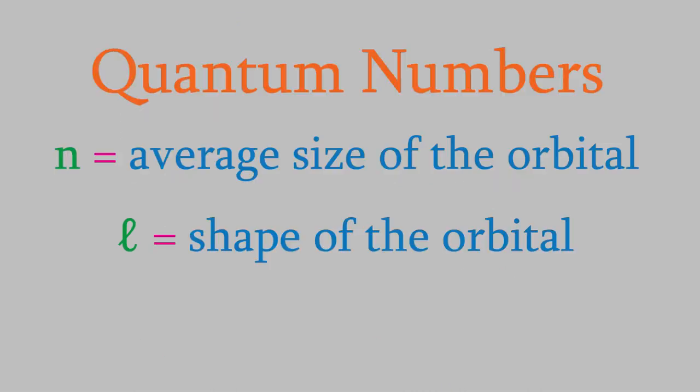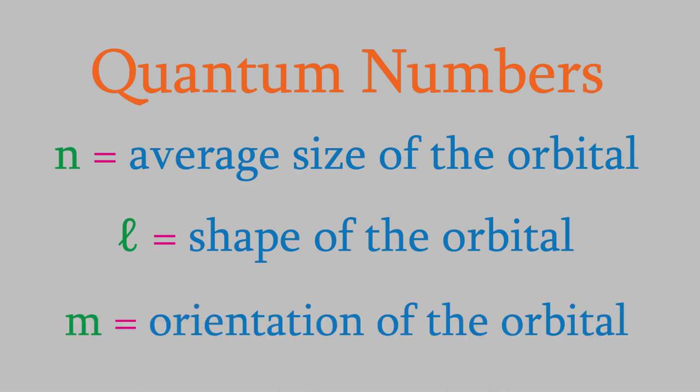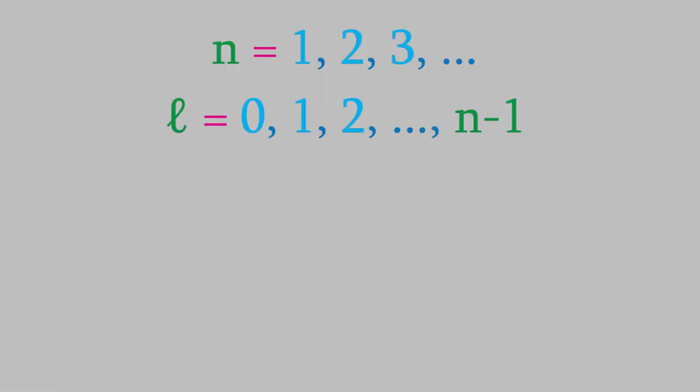So, the quantum number N tells us the average size of the orbital, and the number L tells us the shape. The third quantum number is M, and this tells us the orientation of the orbital, that is, the direction in which the orbital's pointing. Like N and L, M will be an integer, and it will have a value between positive and negative L. So, if L equals one, M can be between negative and positive one, so it could be negative one, zero, or positive one. As I said, the different values of M tell us the orientation of the orbital.